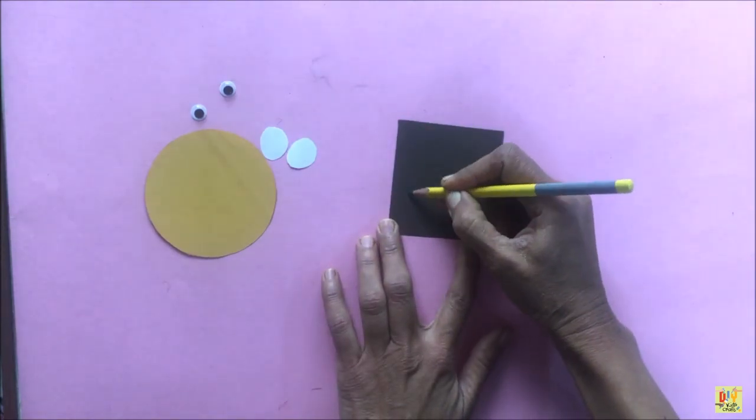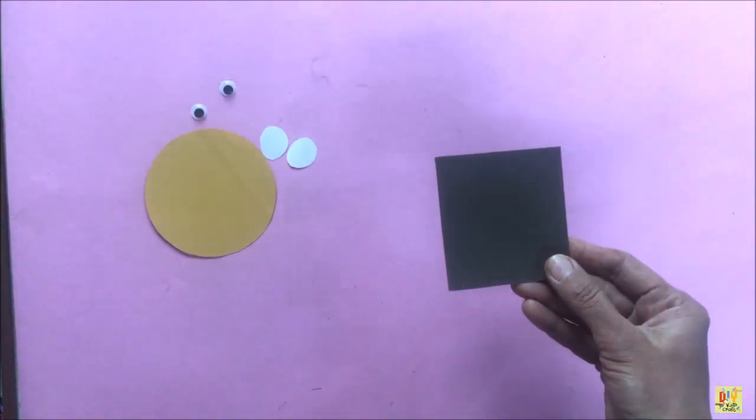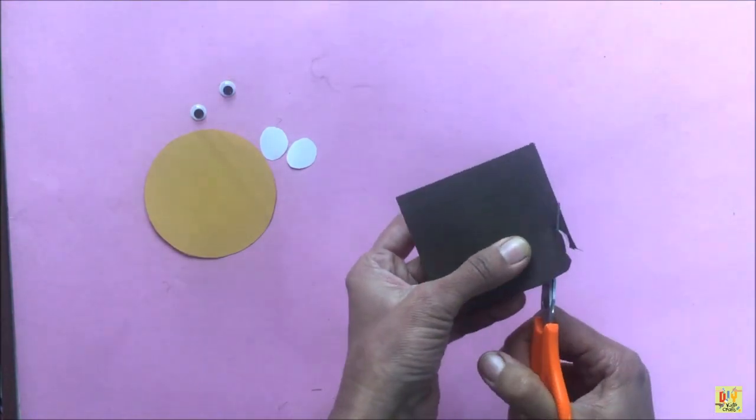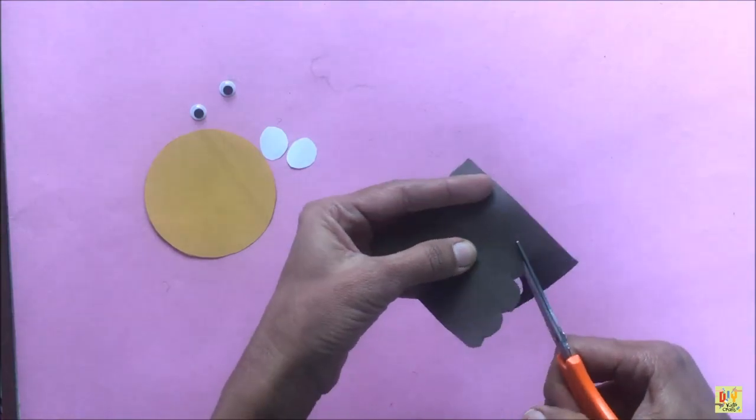And then, we need to get ready our googly eyes. Then, get a black paper and draw like a circle cloud shape. This will serve as our hair for the animal.